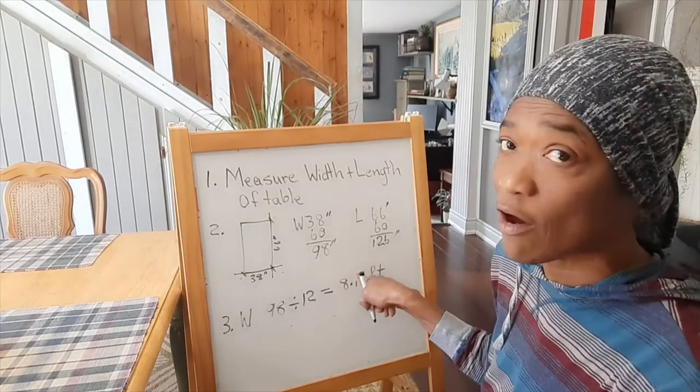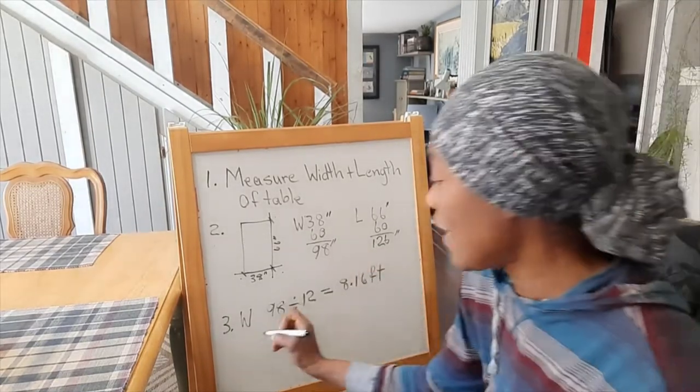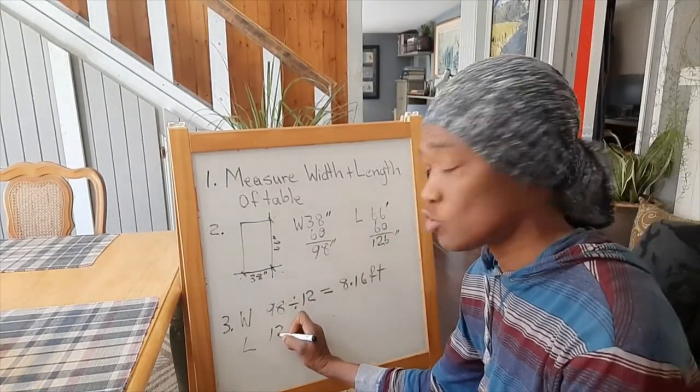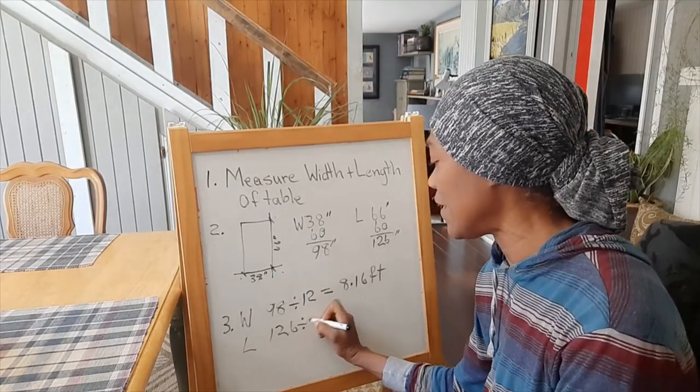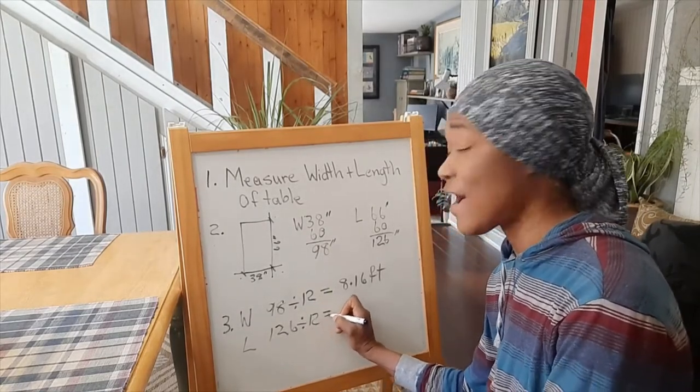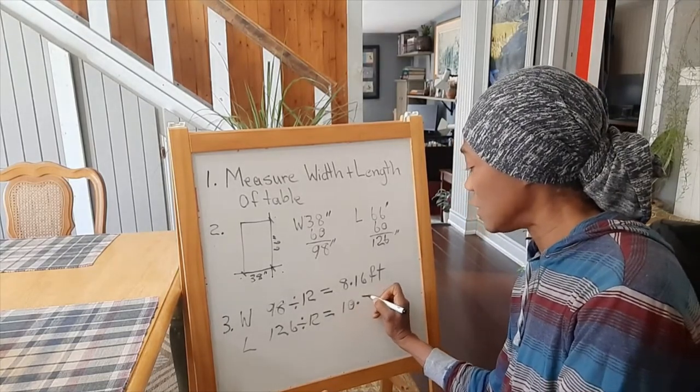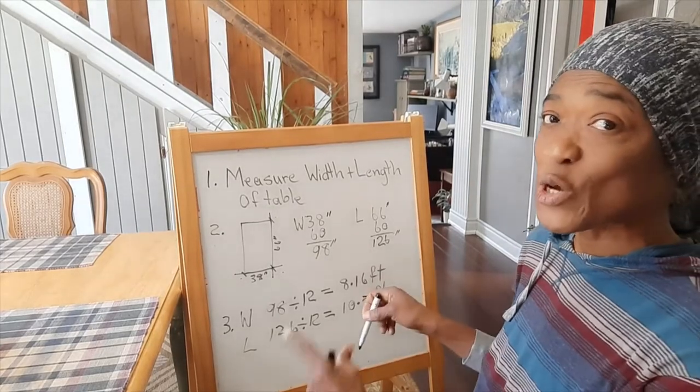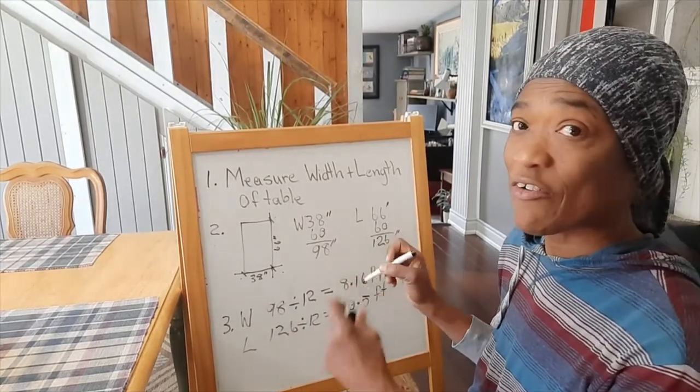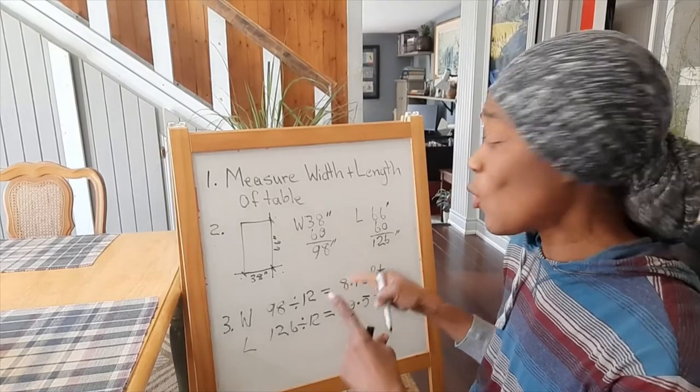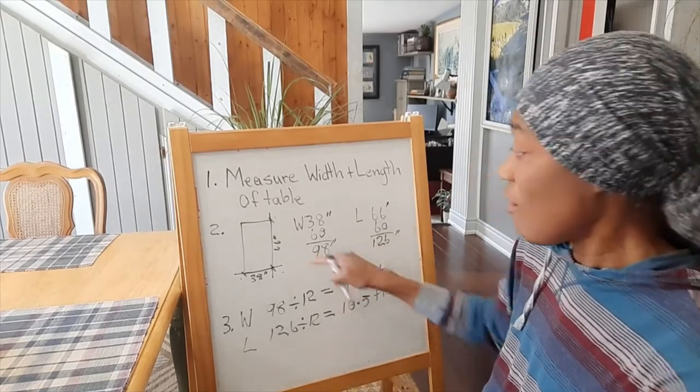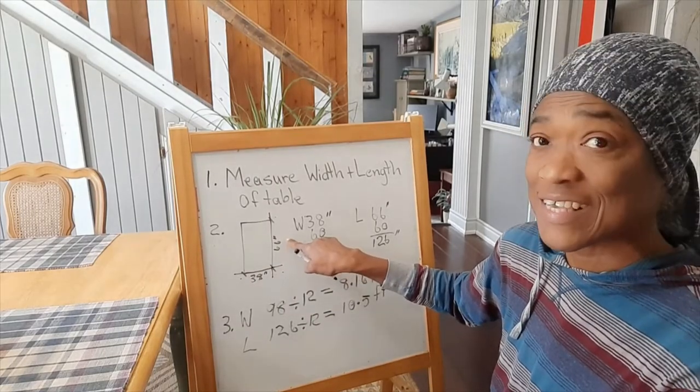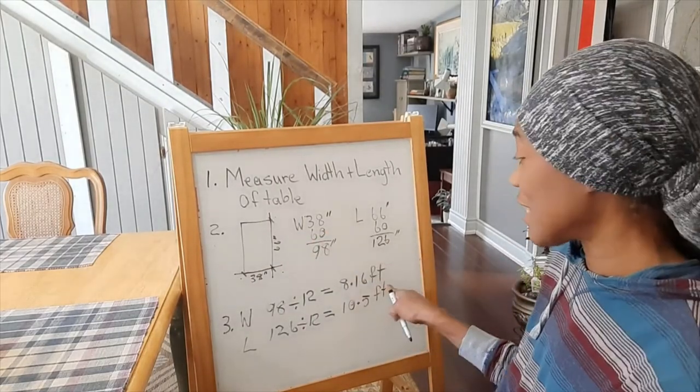Now, the length of our rug will be 126 divided by 12, which gives us 10.5 feet. So in order to get the correct size rug for our dining room table of 38 inches wide and 66 inches long, we'll need a rug that's 8 feet by 10.5 feet.